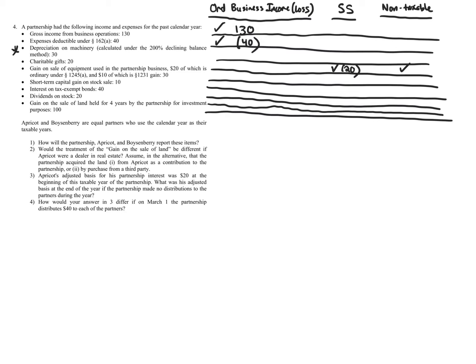The gain on equipment sale totals $30. Of that, $20 is Section 1245 ordinary income recapture due to depreciation, and $10 is Section 1231 gain. The Section 1245 gain of $20 is treated as ordinary income and goes into the Ordinary Business Income Loss — so that's positive $20.